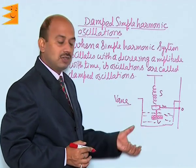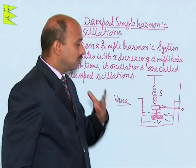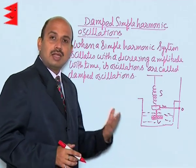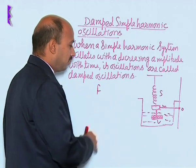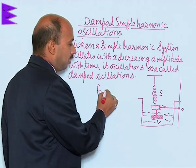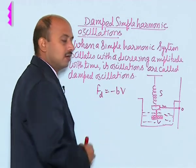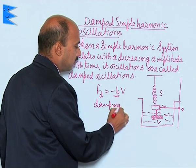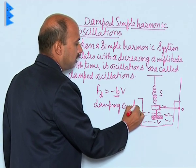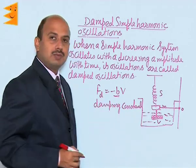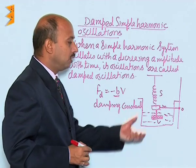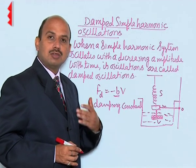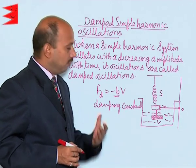This type of oscillation is known as damped oscillation. For small oscillations, the damping force can be written as F_D equals minus bv, where b is called the damping constant. The damping force acting on the body is directly proportional to velocity, with a negative sign because it acts opposite to the velocity.